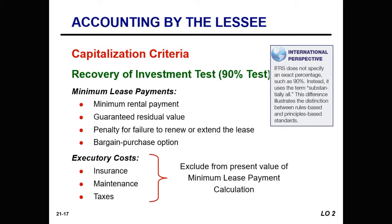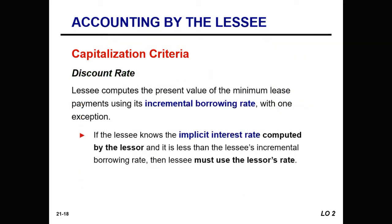Executory costs include things such as the cost of insurance, maintenance, and tax expenses related to the leased asset. When the lessor makes these payments, such amounts are not included in the present value of the minimum lease payments. The lessee uses its incremental borrowing rate as the discount rate to compute the present value of the minimum lease payments.